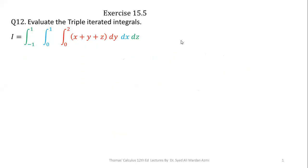The statement of the problem is: a triple integral is given to us with limits from minus 1 to 1 for the variable z, from 0 to 1 for variable x, from 0 to 2 for variable y, and we have to integrate x plus y plus z.